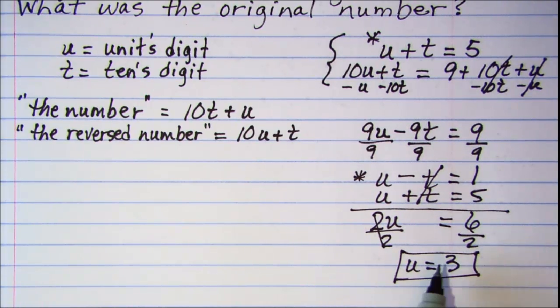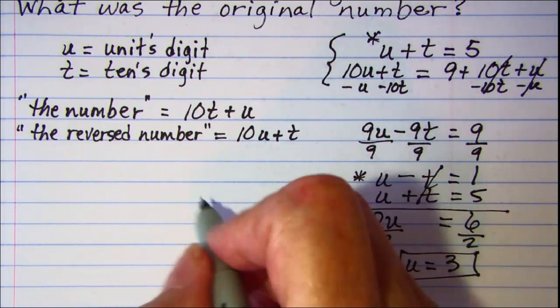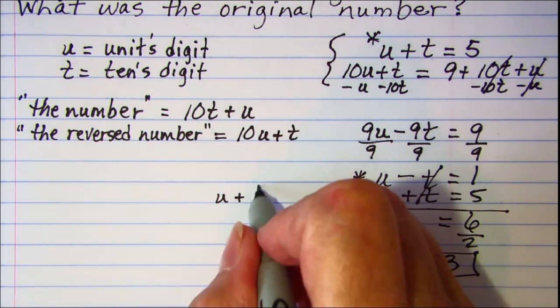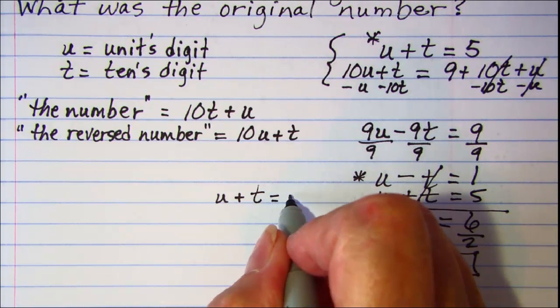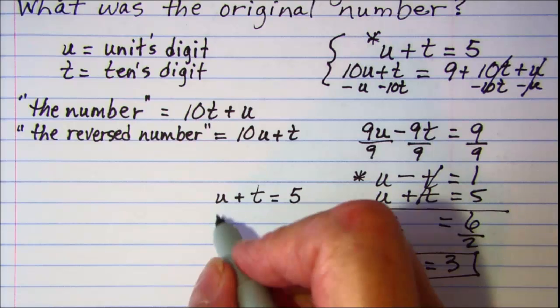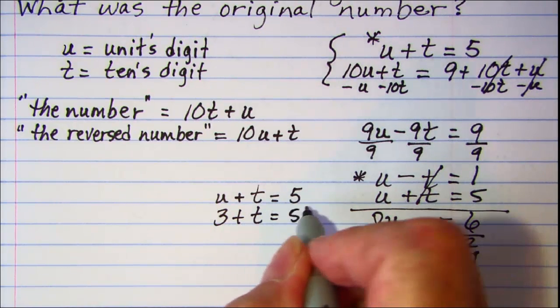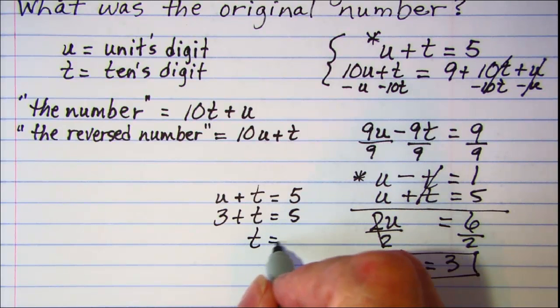Now, if u is 3, we know that u plus t is 5. So, we can substitute in 3 for u and we see that t is equal to 2.